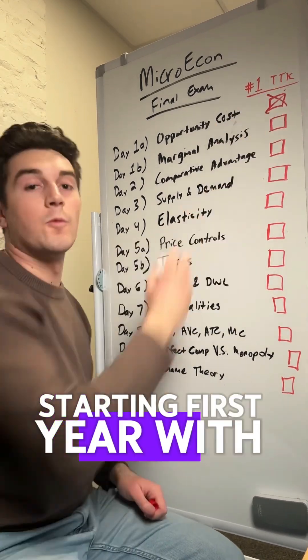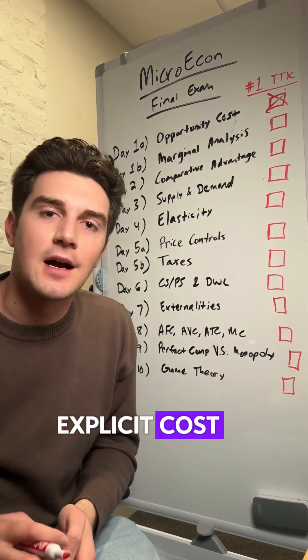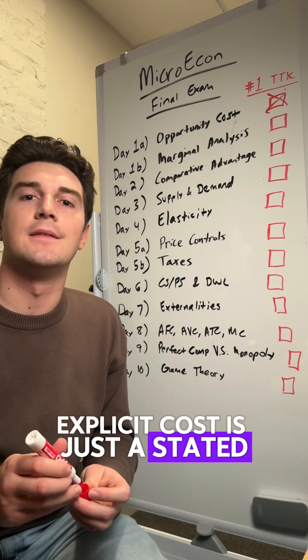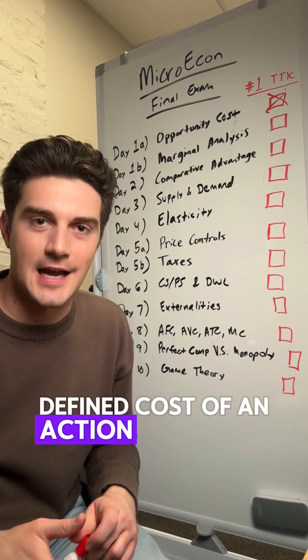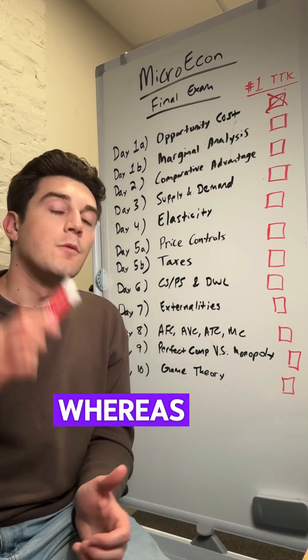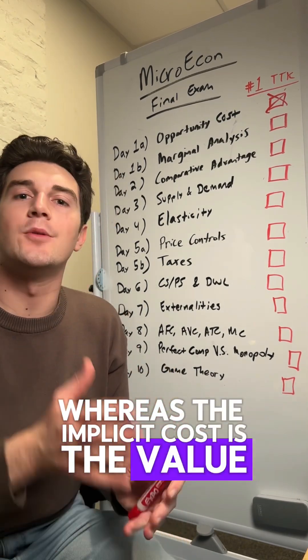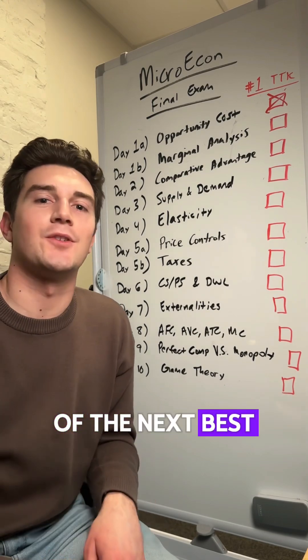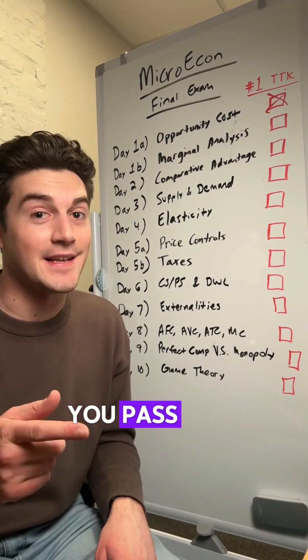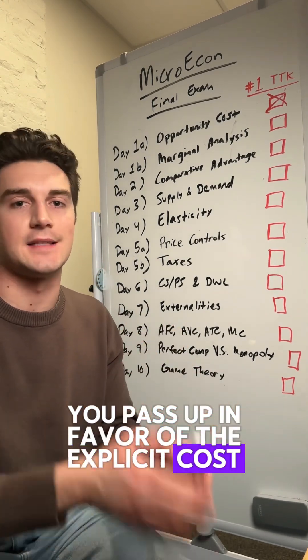Starting first with opportunity cost. Explicit cost is just the stated, defined cost of an action — like what you would see on a receipt. Whereas the implicit cost is the value of the next best alternative you pass up in favor of the explicit cost action.